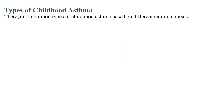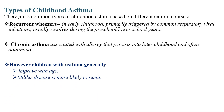There are two types of childhood asthma based on different natural courses. The first is recurrent wheezers, and the second is chronic asthma. Recurrent wheezing in early childhood is primarily triggered by common respiratory viral infections and usually resolves during preschool or early school years. Chronic asthma is associated with allergy that persists into later childhood and often adulthood. However, children with asthma generally improve with age, and milder diseases are more likely to remit.